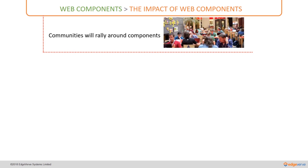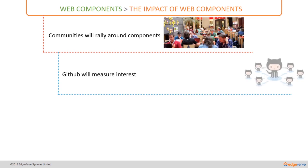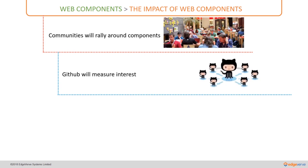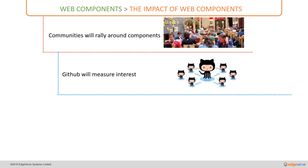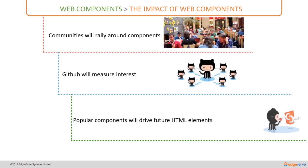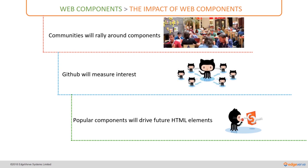All these components are distributed essentially via GitHub, and therefore the number of stars that each component is getting and the number of downloads will be the measurement for interest about a particular component. The popular components will eventually make their way into future HTML as native elements. This is how web components are going to impact the web.